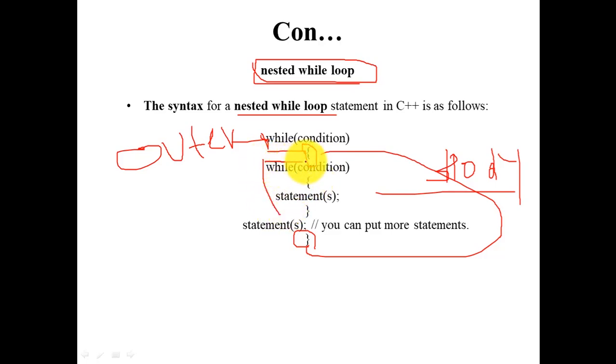What is the inner loop, the outer loop, and the body structure?